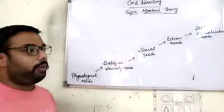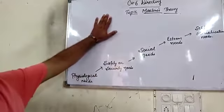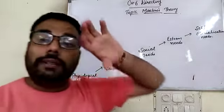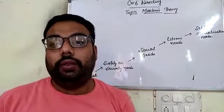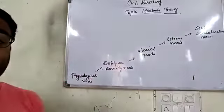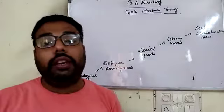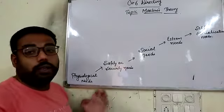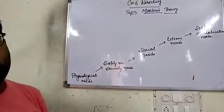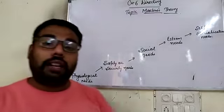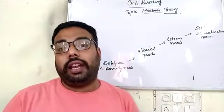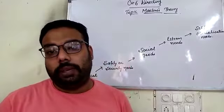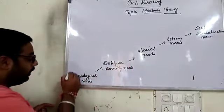The next topic is Maslow's theory — we call it Maslow's Needs Hierarchy Theory. It was given by Sir Abraham Maslow. Abraham Maslow identified five needs which act as motivators for a human being.